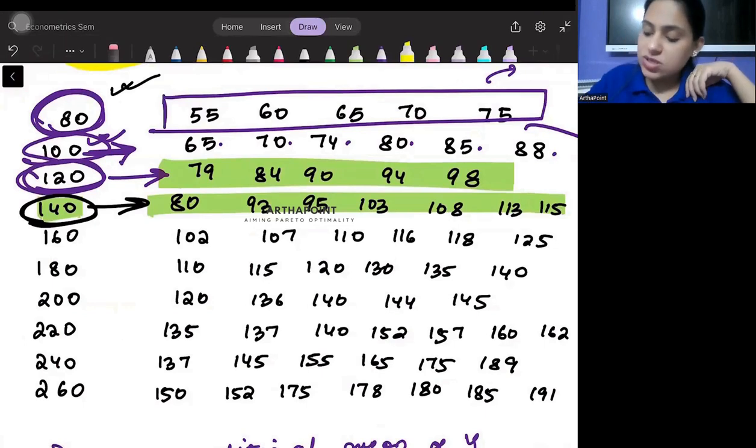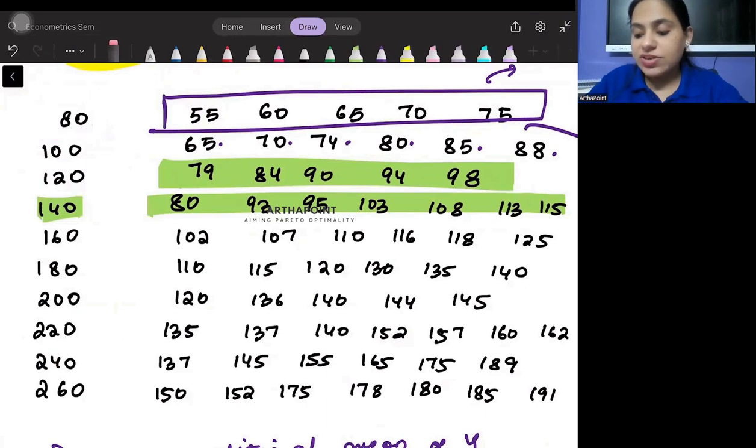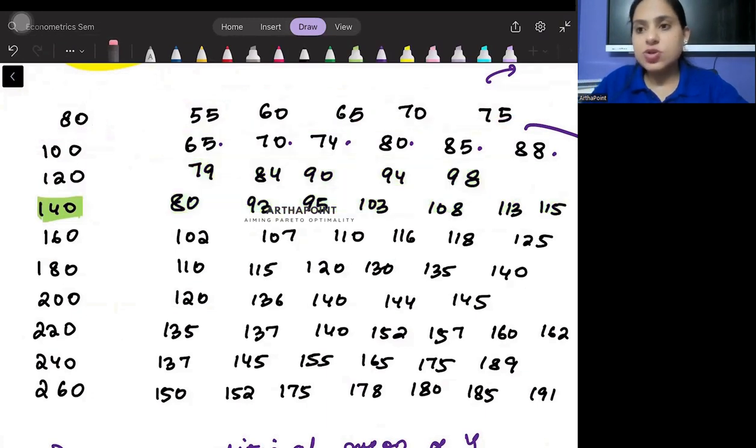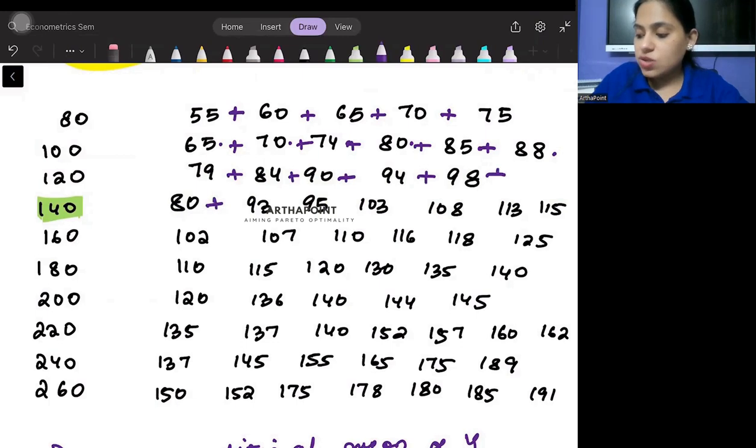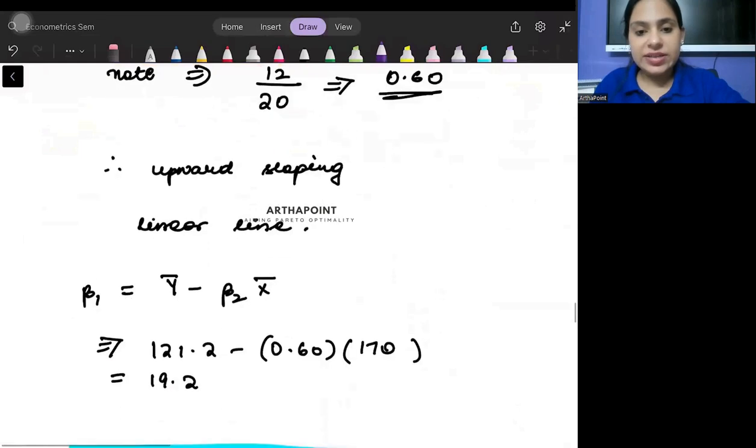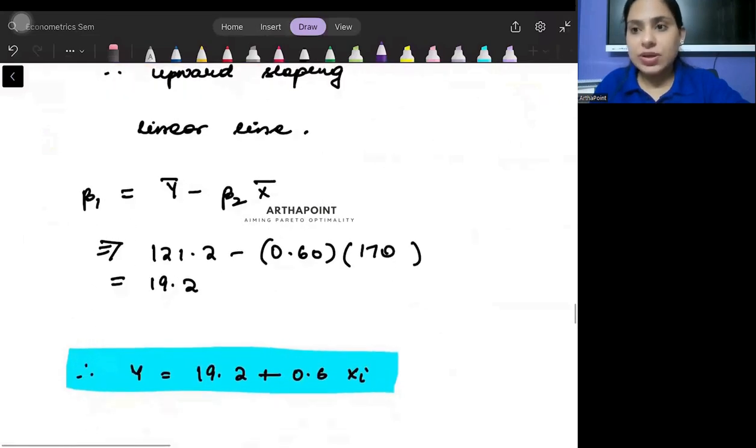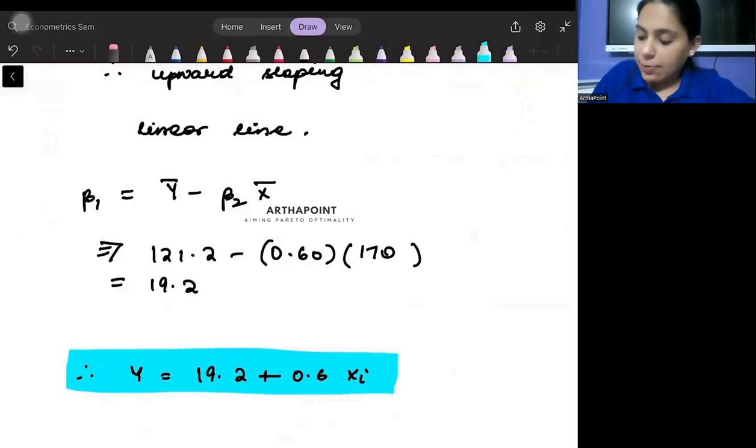It's a tedious task but you have to do this. For finding the value of mean of y, you need to literally add all the terms together: 55 plus 60 plus 65 plus 70 plus 75 plus 65, all of these terms together, and divide it by the number of observations. When you do that and divide it by the number of observations, you will get the mean of y as 121.2.